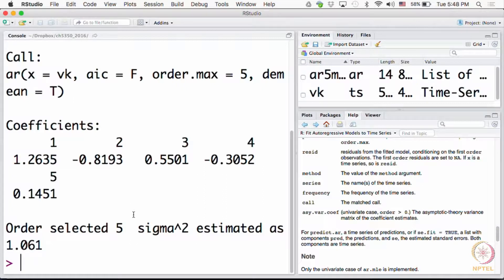At this stage I have no idea whether this is correct or not, whether it's a good model or not. So what is the first check for us? Look at the residuals, ACF of the residuals, whether they are white in color or not.